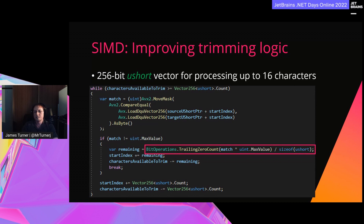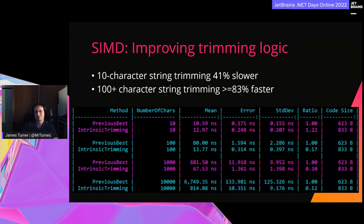In this specialized trimming benchmark, we can see performance in different extremes. There's a performance regression at 10 characters — we're doing a lot more processing than basic trimming would. But for anything longer, we see a significant performance increase: over 83% faster. Depending on the workload, SIMD and other hardware intrinsics can provide huge performance gains.